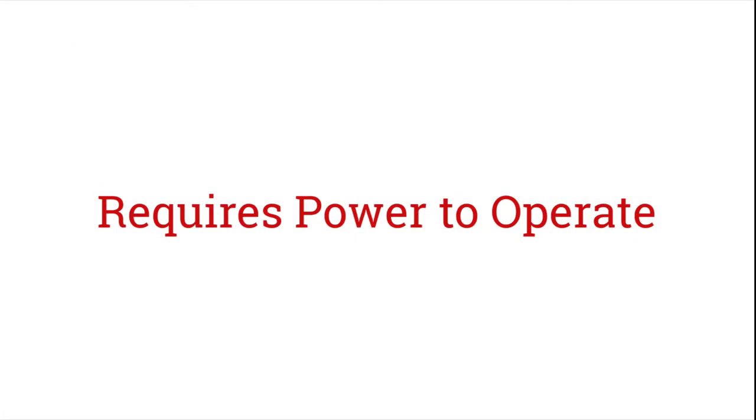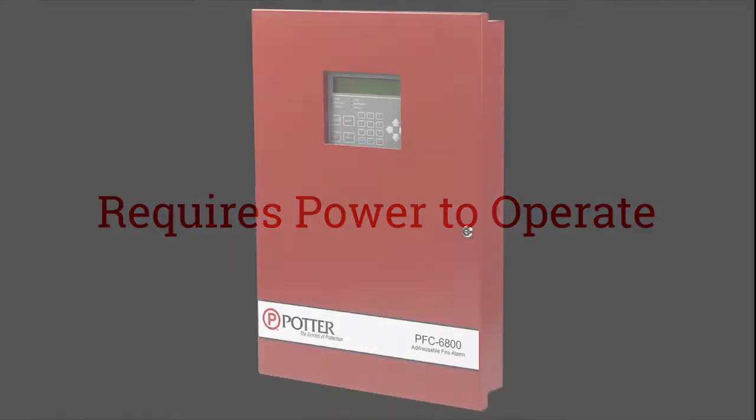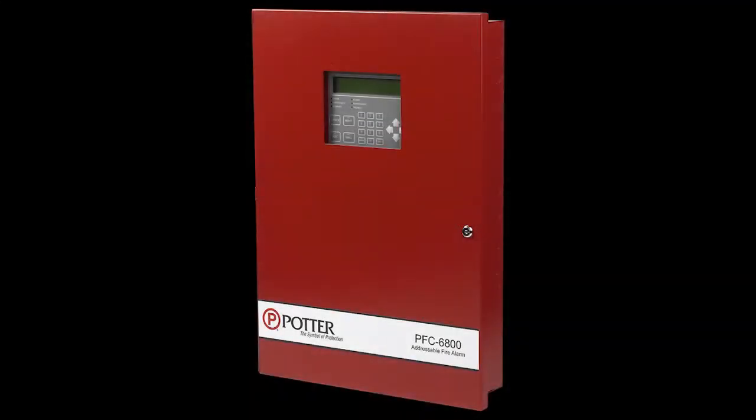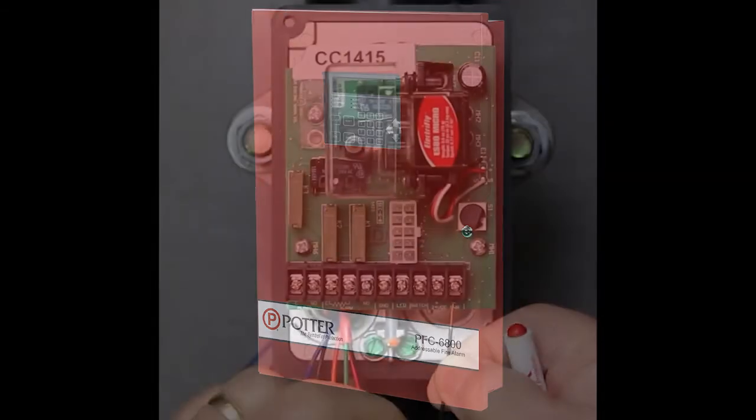The VSRAT requires 24 volt DC to operate and can typically be powered by the auxiliary power of the fire alarm panel or any UL listed power supply that provides sufficient battery backup. The device draws 20 milliamps in standby mode and 120 milliamps when in the auto test process.